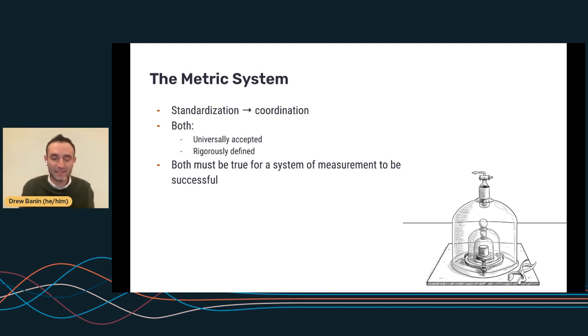So standardization leads to coordination. And a big part of that, a big part of this is having standards that are both universally accepted and rigorously defined. And so the universal acceptance part is key because as we'll see, rigorous definitions for the units of the metric system sometimes came later. But the thing that needed to come first was everyone agreeing that the kilogram and the meter and the other kind of base units were the standards that we were going to apply.